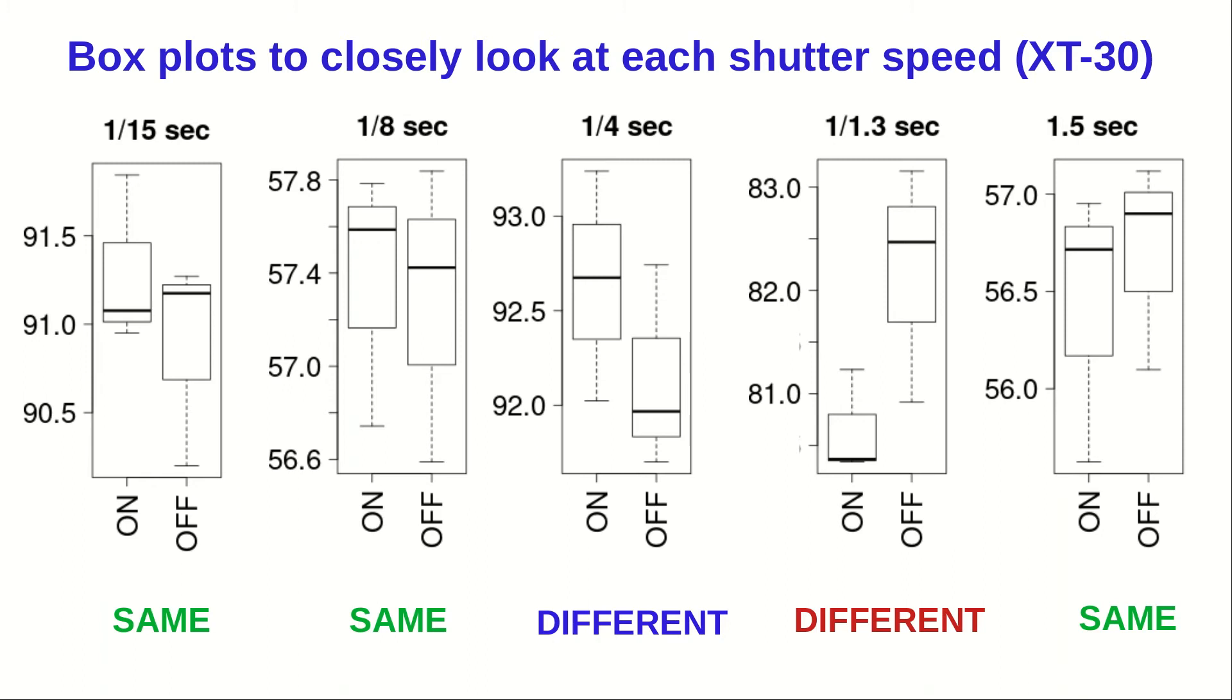But now, let's take a closer look by making box plots for each shutter speed. I don't want to drag you into understanding all about box plots. Suffice it to say that the box corresponds to variation between measurements, and we are roughly wanting to see if the boxes overlap or not.